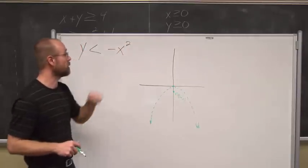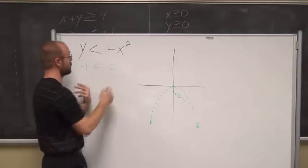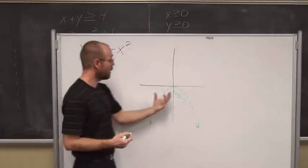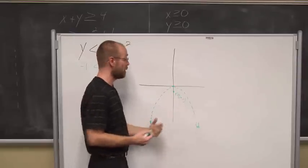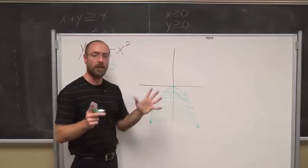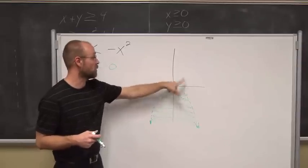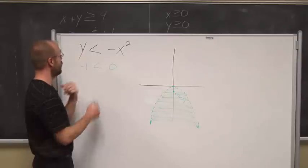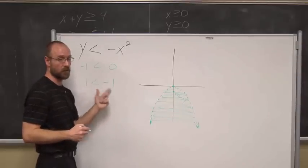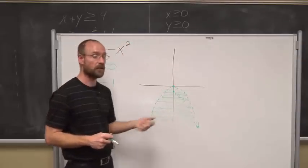Let's plug it in and see if that's a true statement. If I put negative 1 in for y and 0 squared is 0, is negative 1 less than 0? Yes — a negative value is less than 0. Since this is inside my parabola, the area inside makes it a true statement, so I'm going to shade that area. Just to be sure, let's pick a value outside — say (1, 1) — which should make my statement false. 1 squared is 1, so negative 1. Is 1 less than negative 1? No, 1 is positive and greater than negative 1. Not a true statement. So I've confirmed the area inside the parabola is the solution.